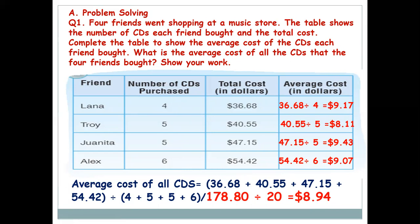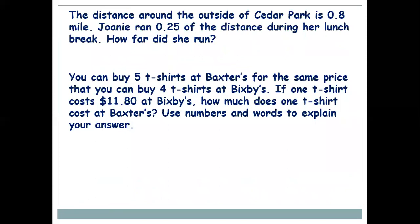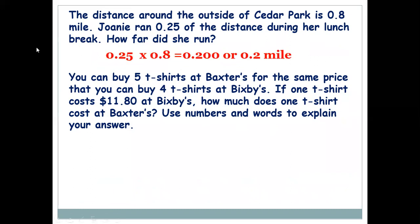You need to practice a lot of decimal division as well as whole number division problems. The next one: the distance around Seda Park is 0.8 mile. Joni ran 0.25 of the distance during her lunch break — how far did she run? She ran 0.25 of 0.8 miles, so do 0.25 × 0.8. You know 25 × 8 = 200; with 2 decimal places and 1 decimal place, move 3 places from the right — the answer is 0.200 or 0.2 mile.